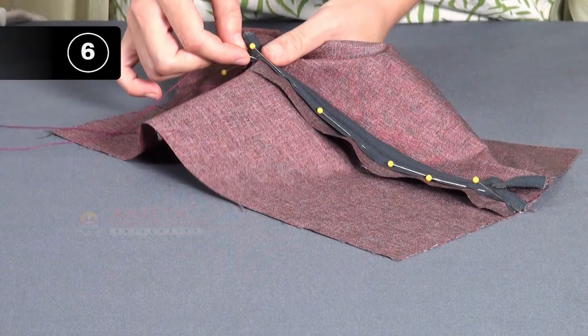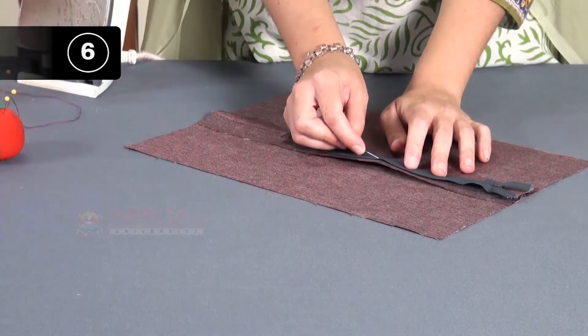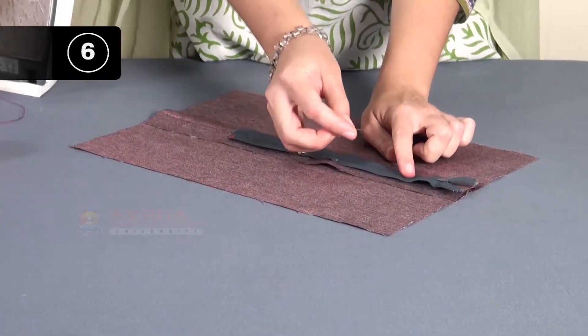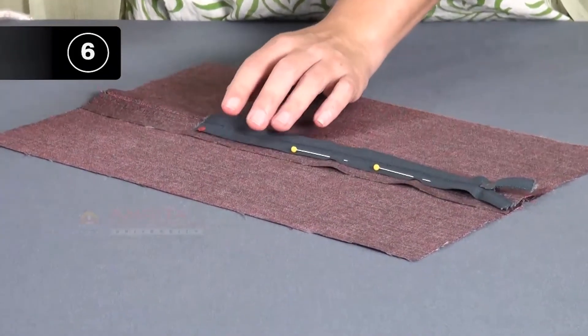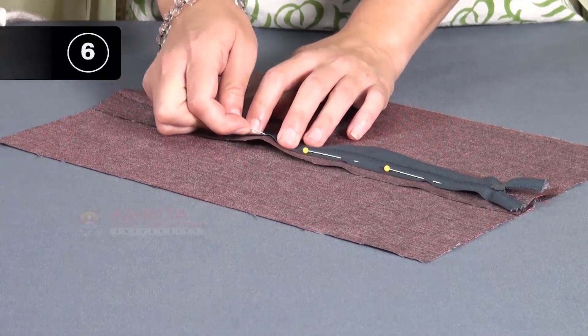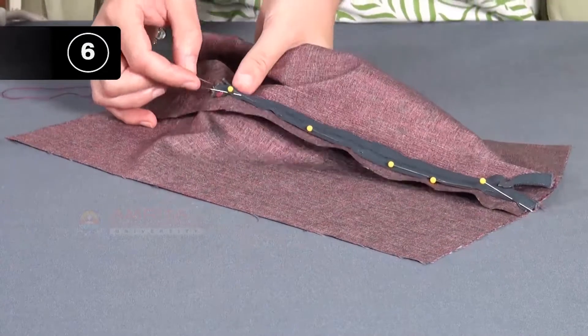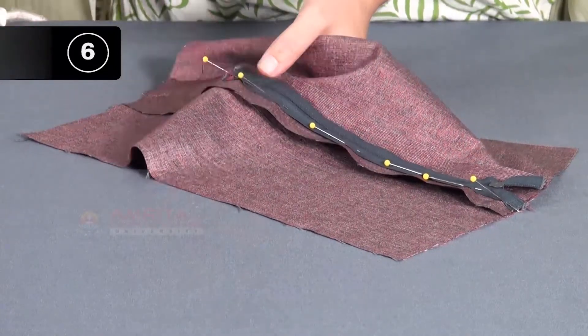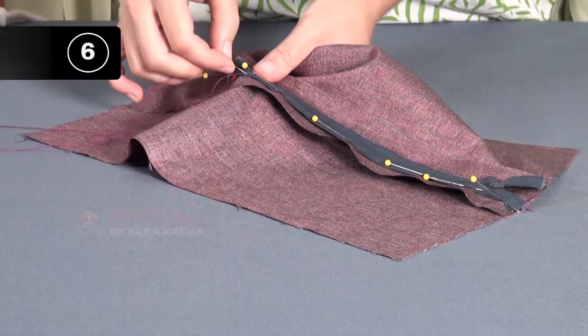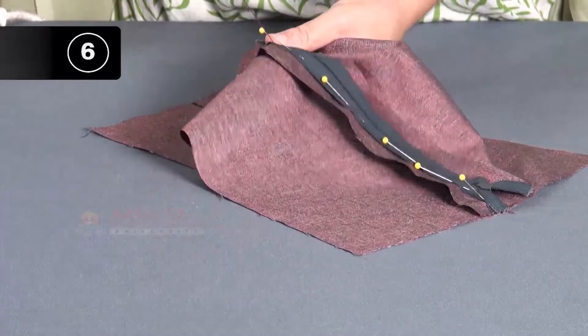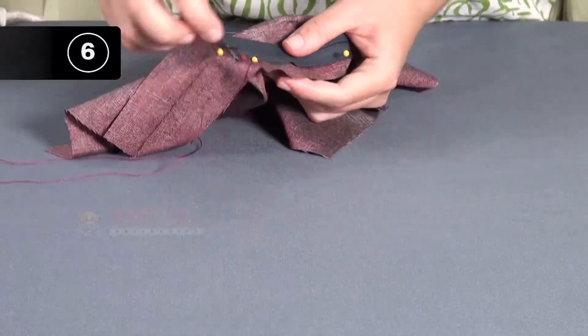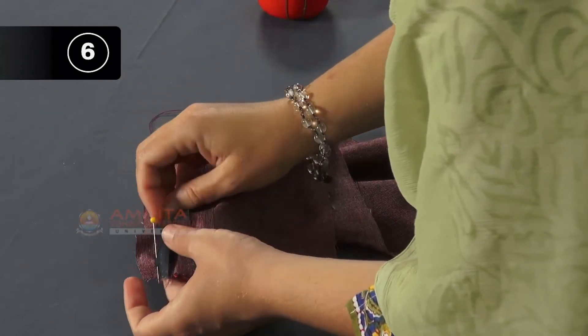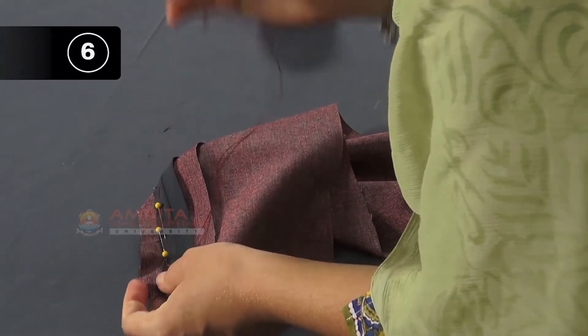Step 6: Pin and baste the zipper. On the wrong side of the fabric, position the zipper on one side of the seam allowance. The zipper teeth should be directly over the seam line. Pin in place and baste the zipper to the seam allowance. From here, flip the zipper over to expose the right side of the zipper. Create a little fold along the teeth or coil with the same seam allowance that you just basted the zipper to. Pin in place.